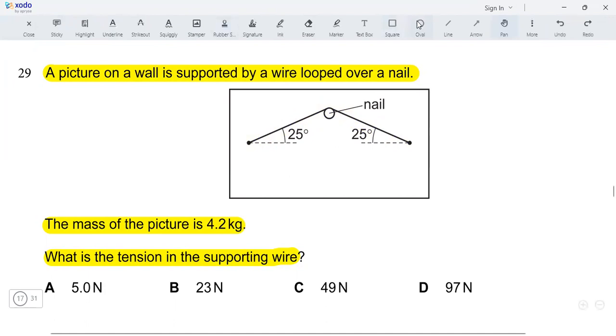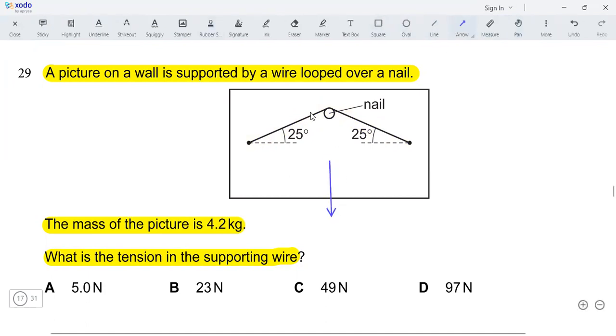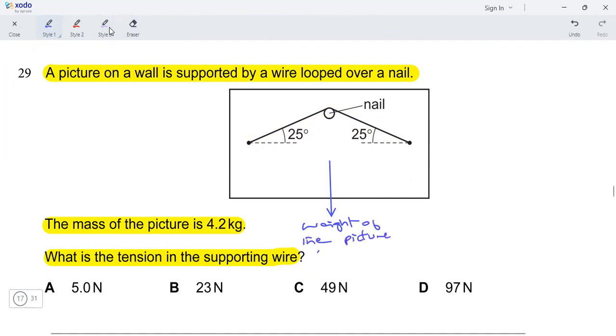Starting with the weight of the pitcher, so it should be acting straight downwards. This is the weight of the pitcher, which is 4.2 multiplied by 9.81. Okay, next we need to find the tension.